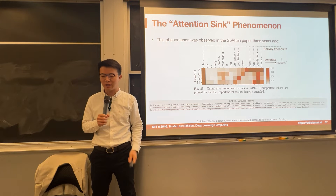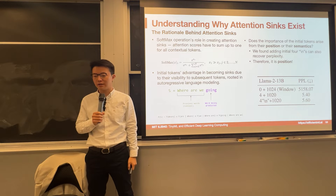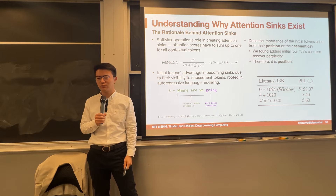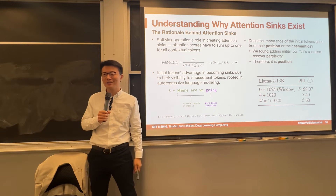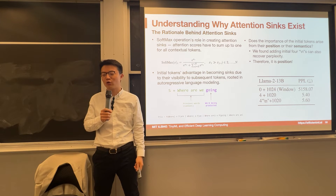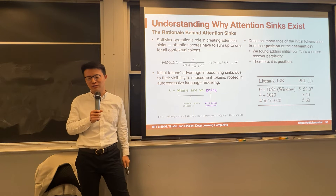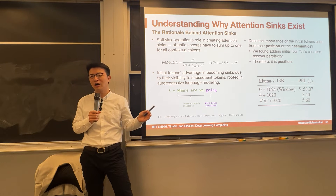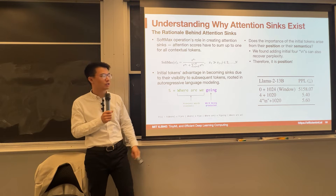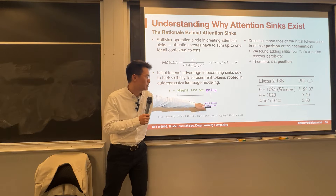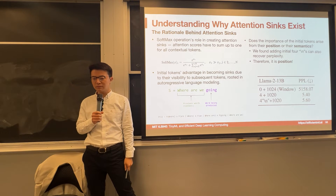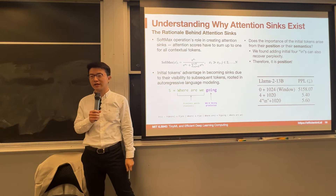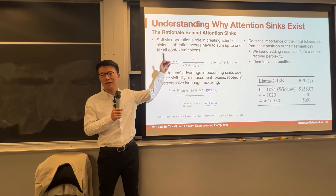We observed this phenomenon three years ago but not until today do we have a deeper understanding of why. It's actually due to the softmax function. In a softmax, the probability has to sum to one. Even if some tokens are not quite important, the attention score must still sum to one for all contextual tokens. So the initial token is special — all subsequent tokens attend to the first token due to the autoregressive manner, and the neural network just decides to dump all excess attention scores to the first token. That's the attention sink hypothesis.